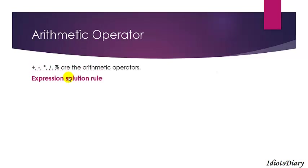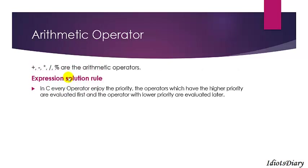In mathematics, the BODMAS rule is used while you solve an expression. But in C there are more than 50 operators, so BODMAS does not work here. So we create a new rule called the rule of precedence. In C, each operator has a priority. The operator which has higher priority is evaluated first, and the operator with lower priority is evaluated later.